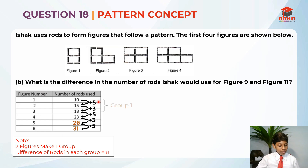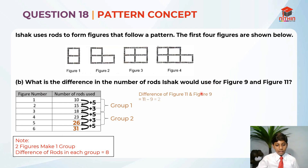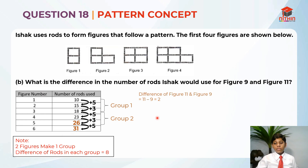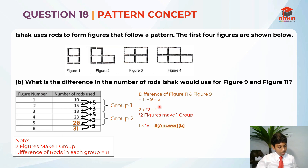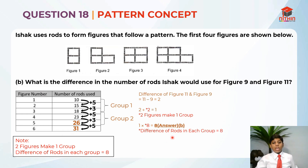The group is 5 plus 3, and 5 plus 3 again. So this is 1 group and this is another group. First we take the difference in figure 11 and figure 9, which is 11 minus 9 equals to 2. Now, 2 figures make 1 group, so we take 2 divided by 2 — because 2 figures make 1 group — which gives us 1. Then we take 1 times 8 equals to 8. This 8 refers to the difference of rods in each group. So the answer is 8 for part B.